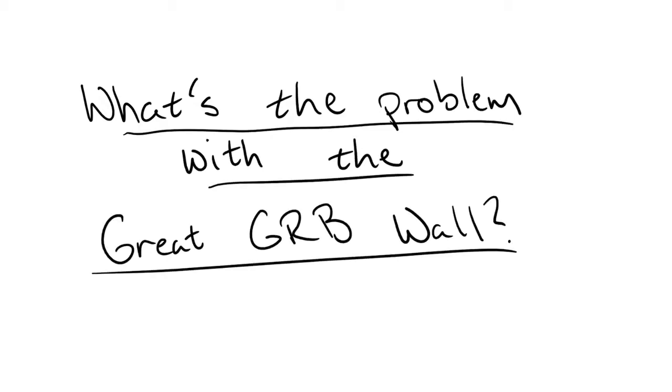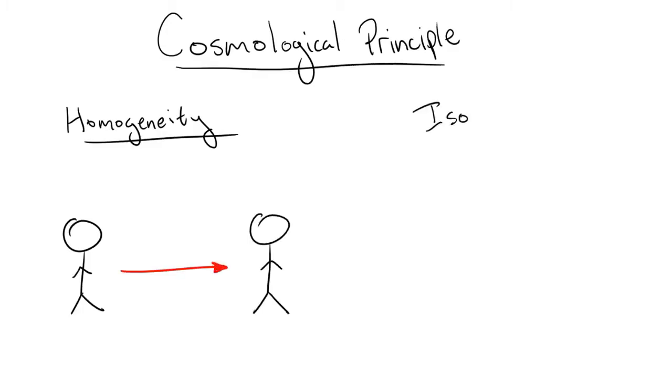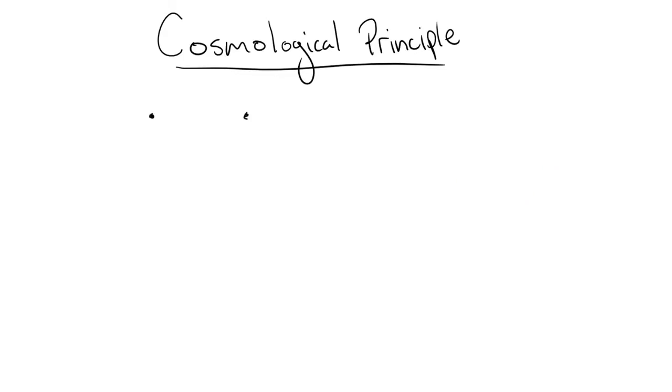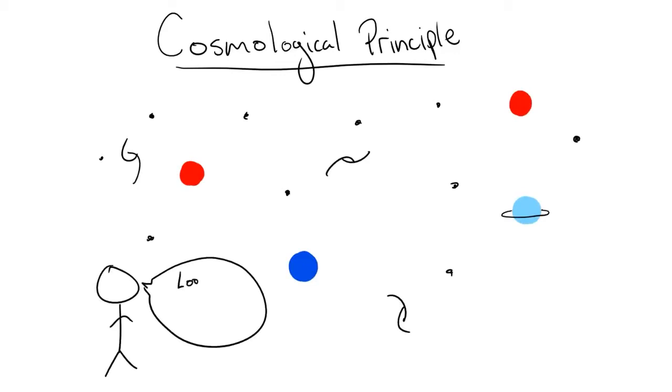So why exactly does this Great GRB Wall not seem to fit into our theories? I'm here from Zap Physics to try to explain a little bit more about this question. It all comes down to what's known as the Cosmological Principle. The basic idea of the Cosmological Principle is that the universe should look the same no matter where you are or which direction you look. Now, I know what you're thinking. This can't be true since we see different stars, planets, and galaxies all around us. The caveat to the Cosmological Principle is that it is only expected to be true above some very large length scale. This is due to the fact that we expect the universe to have been very small right after the Big Bang.